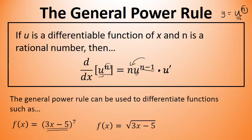f of x equals the square root of 3x minus 5 is another function that can be differentiated using the general power rule. This would require rewriting the function as 3x minus 5 to the one-half power. u is 3x minus 5, and then the n in this case is one-half.